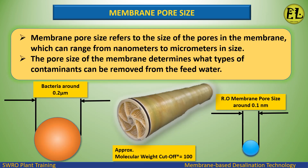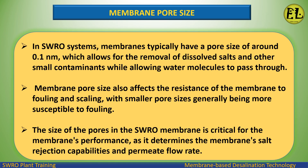Membrane Pore Size refers to the size of the pores in the membrane, which can range from nanometers to micrometers in size. The pore size of the membrane determines what types of contaminants can be removed from the feed water. In SWRO systems, membranes typically have a pore size of around 0.1 nanometers, which allows for the removal of dissolved salts and other small contaminants while allowing water molecules to pass through.